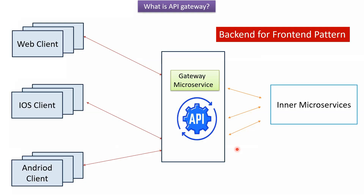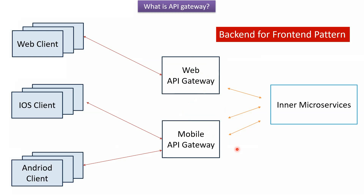The API Gateway can serve different types of clients, like web clients and mobile clients — where mobile clients can be iOS or Android. Instead of overcomplicating the existing API Gateway, we can segregate into two API Gateways: one for web and one for mobile. This approach is called the Backend for Frontend pattern, because we are creating different backend endpoints for different frontend clients.